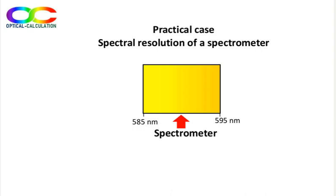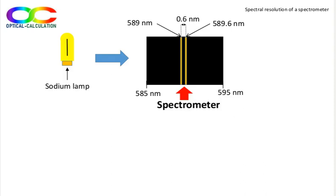In this practical case, we want to build a spectrometer on a small spectral range of 10 nm between 585 and 595 nm. It should enable at least to resolve the double spectral line of a sodium lamp, which is emitted at 589 and 589.6 nm.